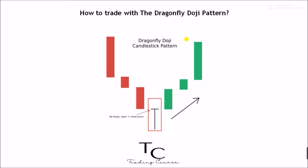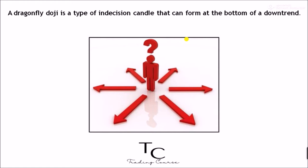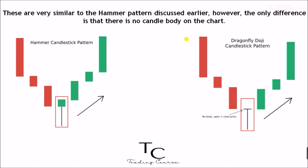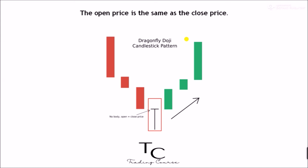How to trade with the dragonfly doji pattern. A dragonfly doji is a type of indecision candle that can form at the bottom of a downtrend. These are very similar to the hammer pattern discussed earlier, however the only difference is that there is no candle body on the chart — the open price is the same as the close price.